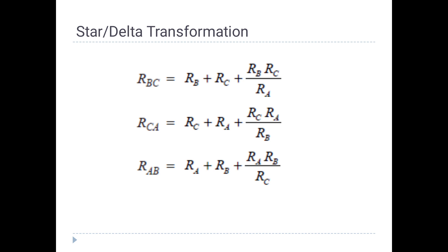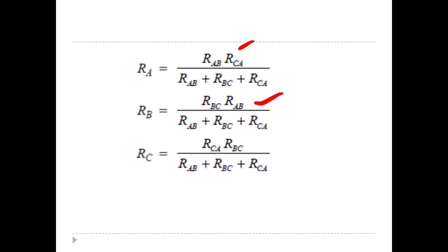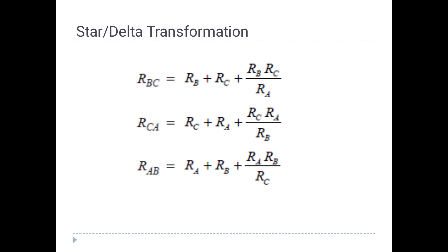Now we know star to delta conversion. In this figure, we do star to delta conversion. The star parameters RA, RB, and RC are known. We need to find the delta parameters RAB, RBC, and RCA. We can use the derived formulas for this transformation.